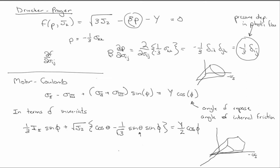Phi is the angle of internal friction, Y is the yield stress, but now we have this new variable here, theta. So, let's talk about what that is.